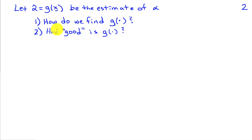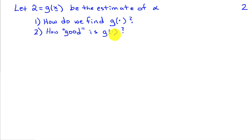We can ask: how do we find what G should be? But before that, we want to understand how to characterize the quality or goodness of a particular estimator G. If we know what makes an estimator high quality, we can try to find the highest-quality estimators. This lecture focuses on measuring the quality of an estimator G.